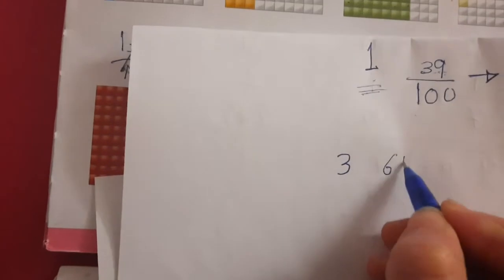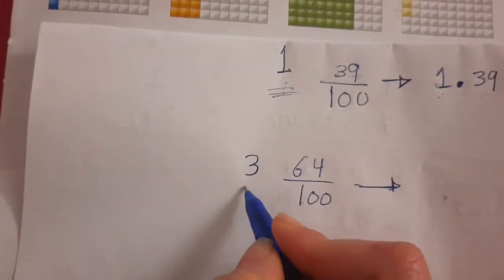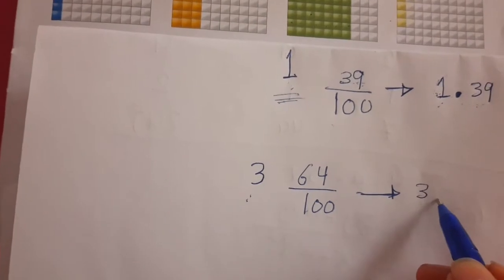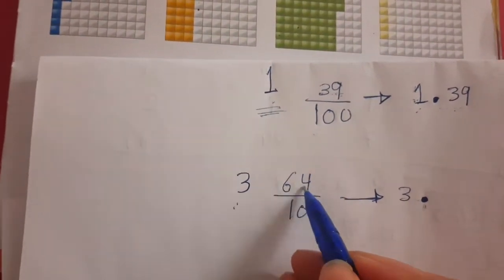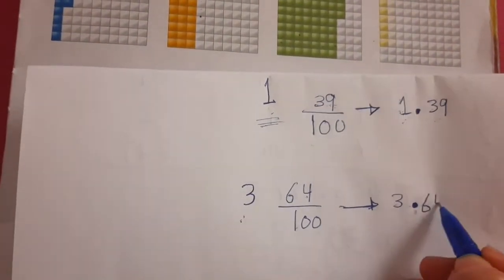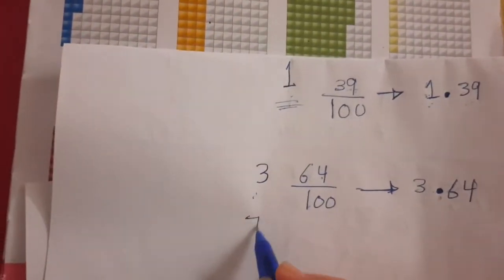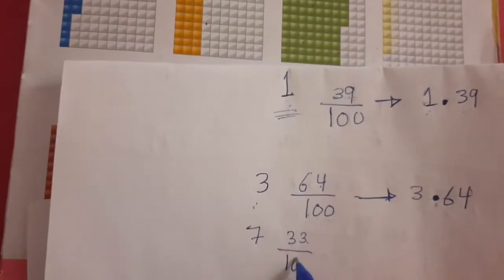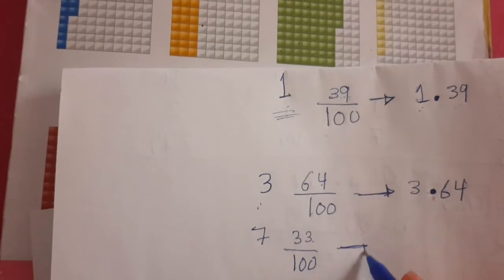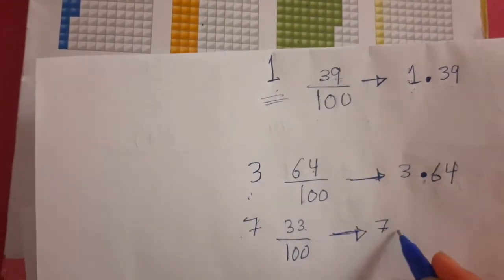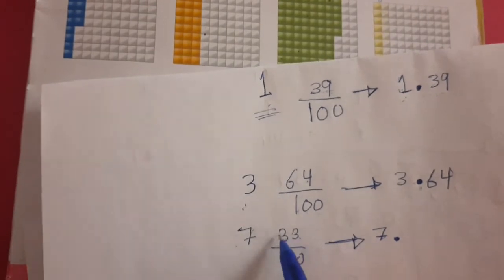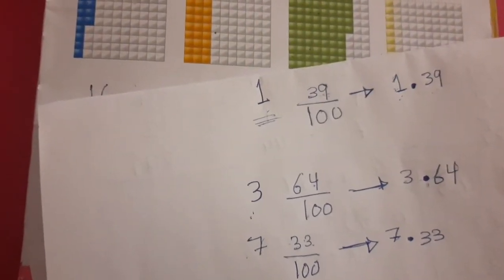Now I will put one example. If we have three and sixty-four out of one hundred, we will convert into decimals. We have a whole number — yes. So put three in the ones place, then decimal point, then sixty-four colored parts. Write sixty-four. Another example: seven and thirty-three out of one hundred. We will convert into decimals. We have whole number seven — write seven in the ones place, then decimal point, then thirty-three. Thank you, my students.